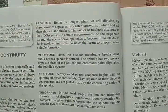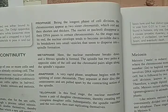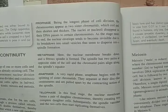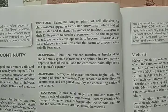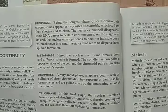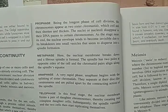Telophase is the final stage. The nuclear membrane reforms around each pair of daughter chromosomes, thereby creating two complete daughter cells. Subsequently, the spindle vanishes and the two cells then start replicating themselves.